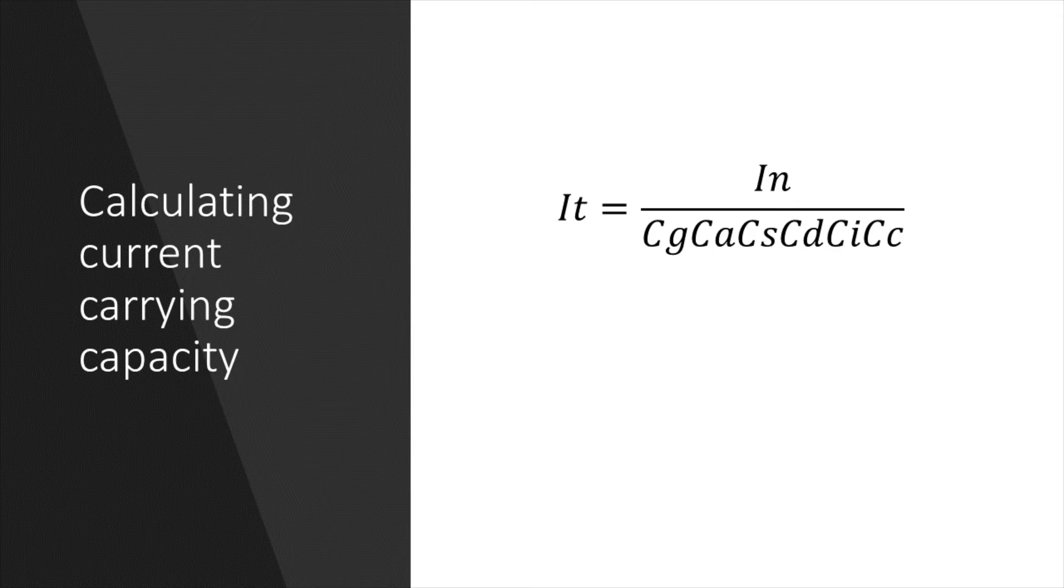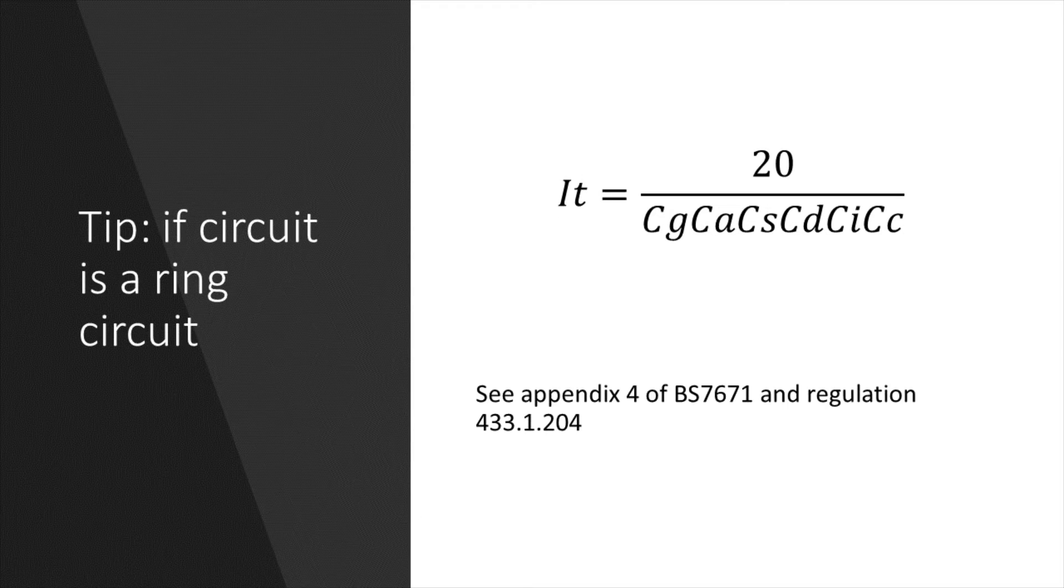However, as I mentioned earlier, there are a couple of exceptions to this. The first is when it comes to ring socket circuits. If you install a ring socket circuit wired in 2.5mm cable and protected by a 32-amp protective device, as described in Appendix 15 of BS7671, in that situation the protective device rated at 32 amps is greater than the rating of the 2.5mm cable. The reason for this is explained in Regulation 433.1.204.